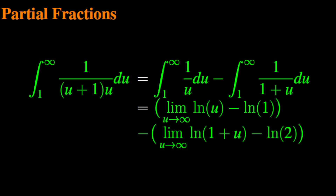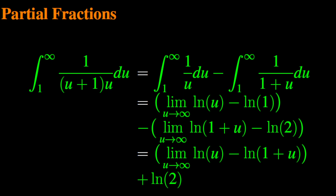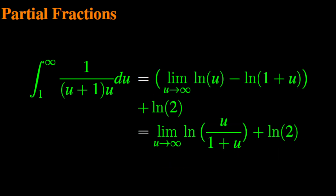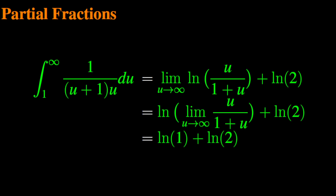Therefore, the integral from 1 to infinity of 1 over u times u plus 1 du is equal to the limit as u goes to infinity of the natural log of u minus the natural log of 1, minus the limit as u goes to infinity of the natural log of 1 plus u minus the natural log of 2. This can be simplified as the limit as u goes to infinity of the natural log of u minus the natural log of 1 plus u, plus the natural log of 2. Using the continuity of the log function, this expression is equal to the natural log of 1 plus the natural log of 2.